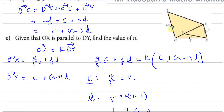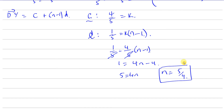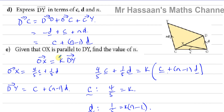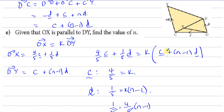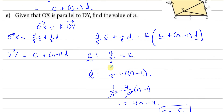So N equals 5/4, meaning CY equals five-fourths d. We used the fact that OX is parallel to DY to set OX equal to a constant times DY. Comparing coefficients of c gives us K, and substituting K into the d equation lets us solve for N.